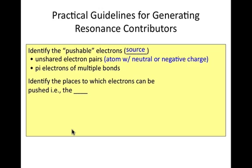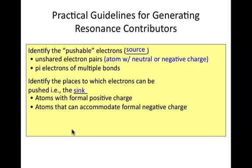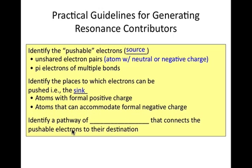The next thing you have to designate is where are these electrons going to be pushed. This is the electron sink. Typical places for the electron sink to be are atoms with a formal positive charge or an atom that can accommodate a formal negative charge, which tends to be an electronegative atom, such as oxygen or nitrogen.